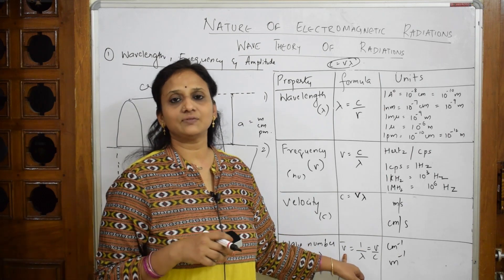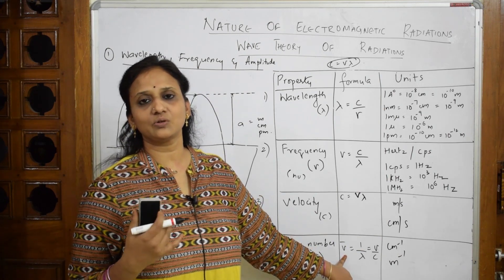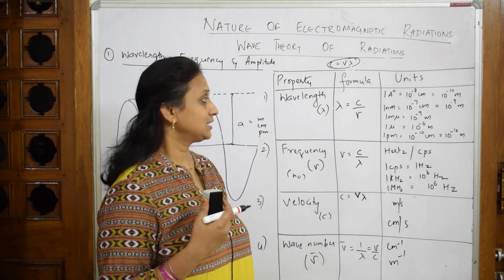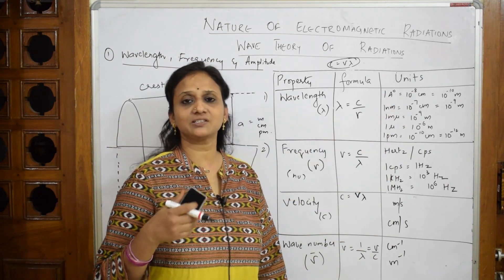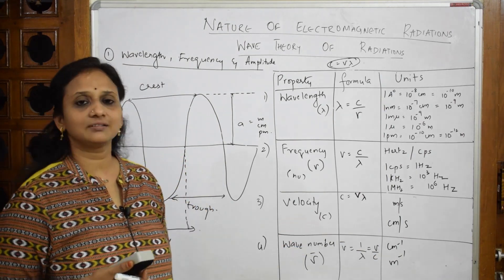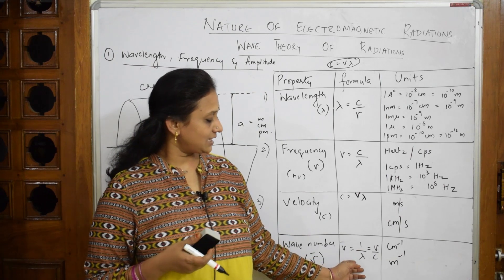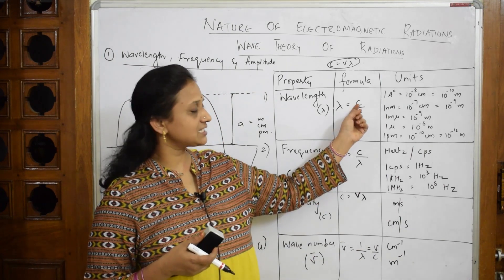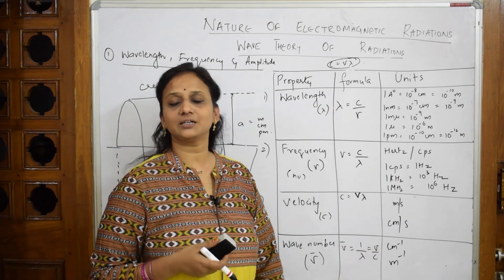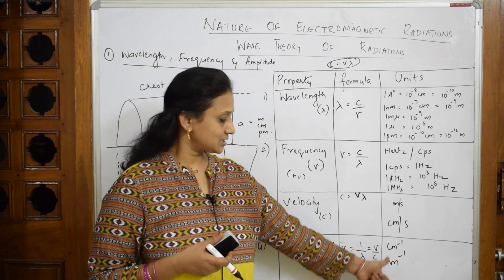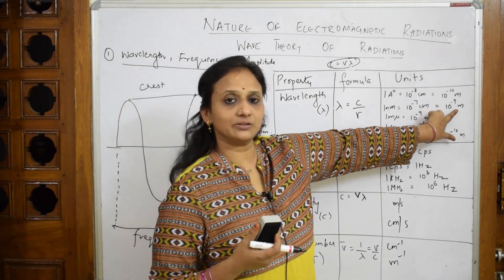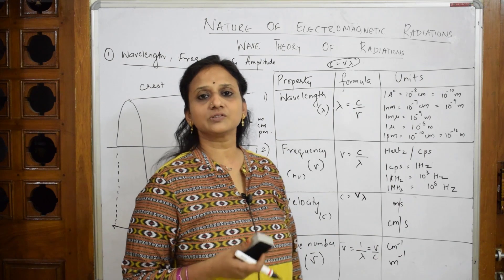Wave number, nu-bar, equals one divided by lambda. If you get a wavelength of, say, 20 centimeters, then one divided by 20 centimeters is your wave number. Since lambda is c/ν, the reverse of this also reverses, and the units for wave number are centimeter inverse and meter inverse.